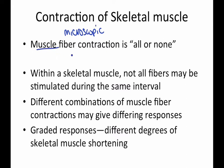First of all, muscle fiber contraction is either going to be all or none. What that means is it's either going to contract 100% or it's not going to contract at all. This is not the same thing as partially flexing your bicep muscle — we're on a microscopic level. So muscle fiber contraction is either going to be all or none.